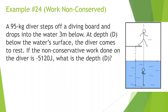A diver steps off a diving board and drops into the water to a depth d below the water surface. The diver comes to rest. The height above the water is 3 meters. The non-conservative work done on the diver is negative 5,120 joules — that comes from the resistance of the water. I like to set the zero line at the lowest point the object will reach, so that's my zero line at the bottom.